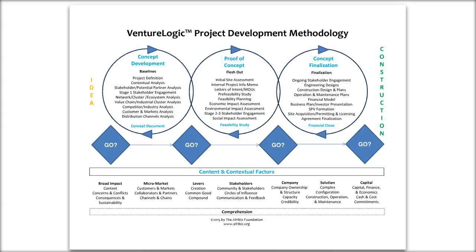There are three major phases or stages. First is concept development — taking that idea and getting down a solid concept and business model of what this could look like. You're not actually proving it out; you're investigating and developing baselines to determine if this project makes sense to go forward. Then in proof of concept, you're fleshing things out and trying to see if this is going to be bankable.